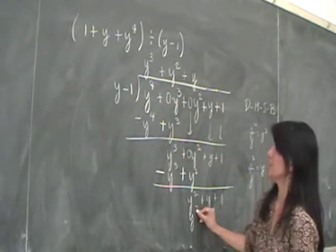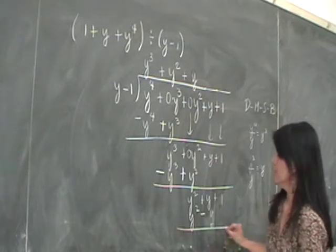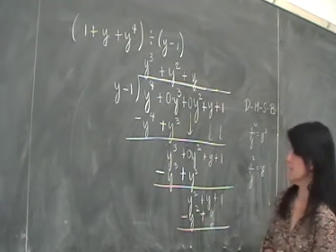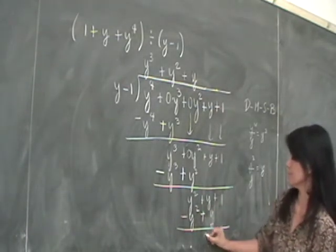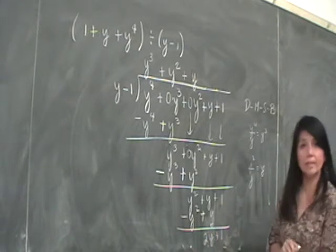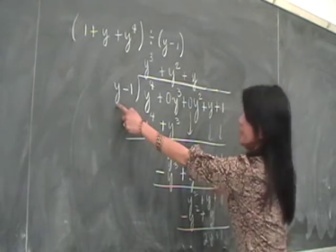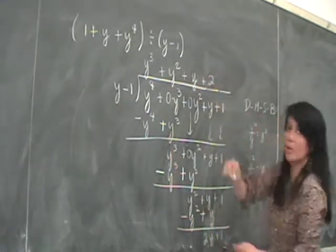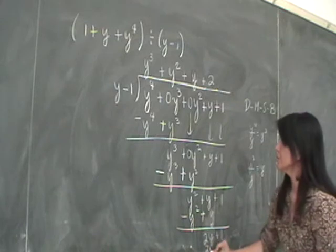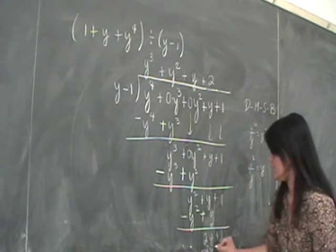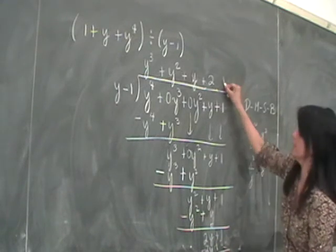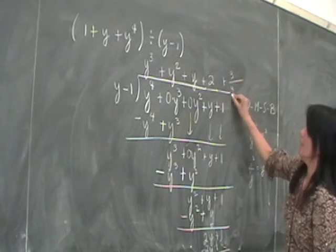Multiply, so you'll get y squared minus y. Don't forget to change the signs first. So you'll get what? 2y plus 1, right? 2y plus 1. 2y divided by y will give you 2. You know how to continue, right? The rest. So you'll have 2y minus 2. Change the sign. So you'll have a remainder of 3. Okay.